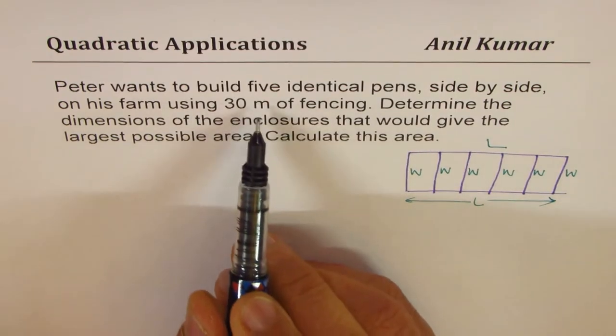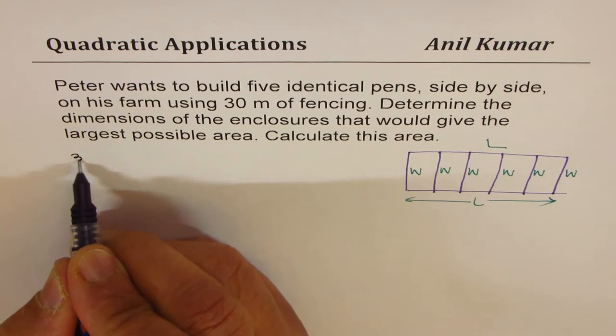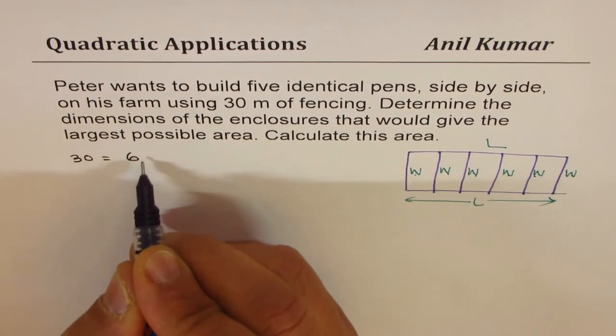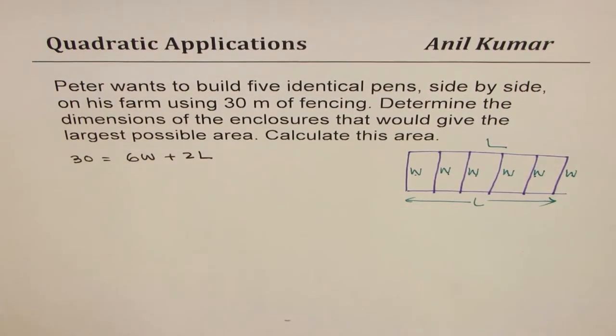Since we know that the fencing is 30 meters, that is the perimeter. So 30 meters should be equal to 6W plus twice the length. That is how two variables length and width are related.